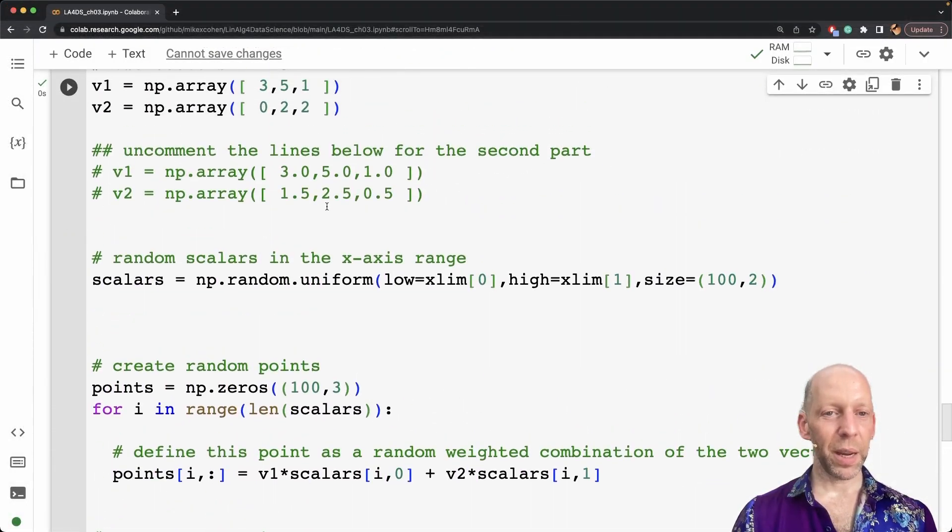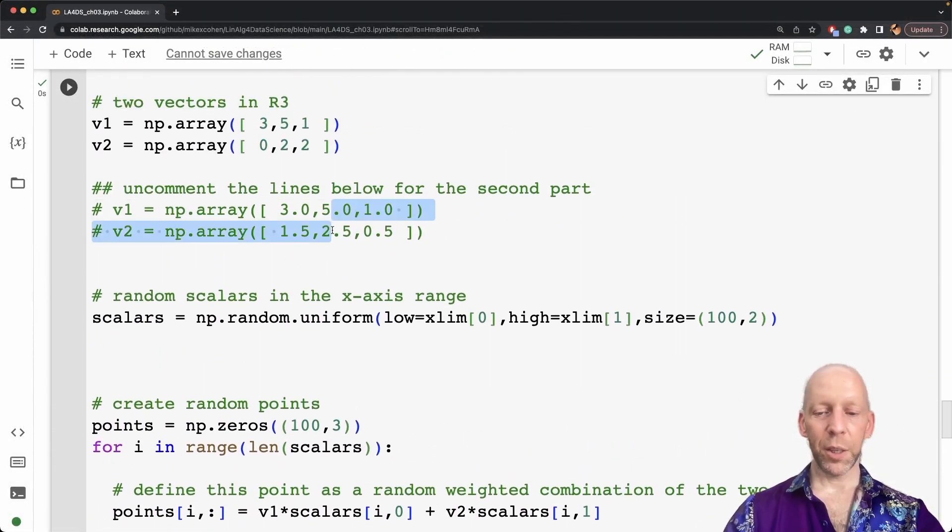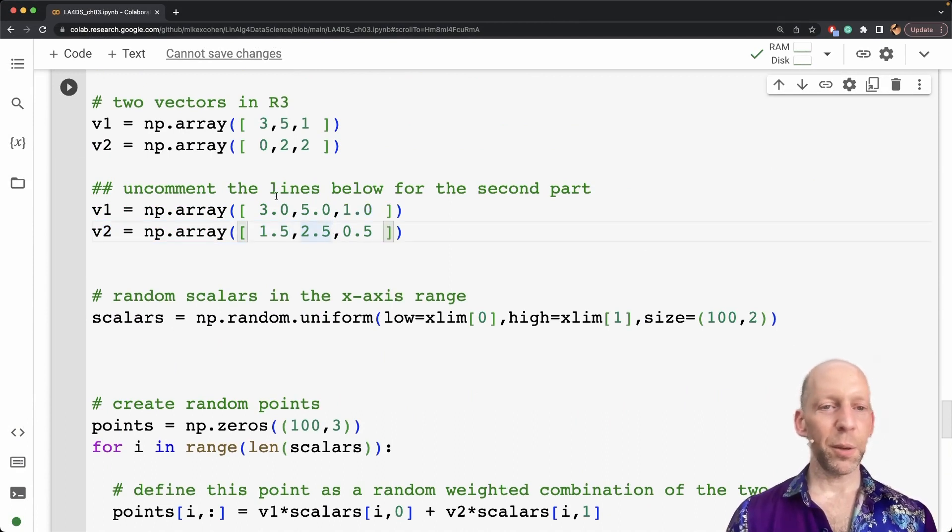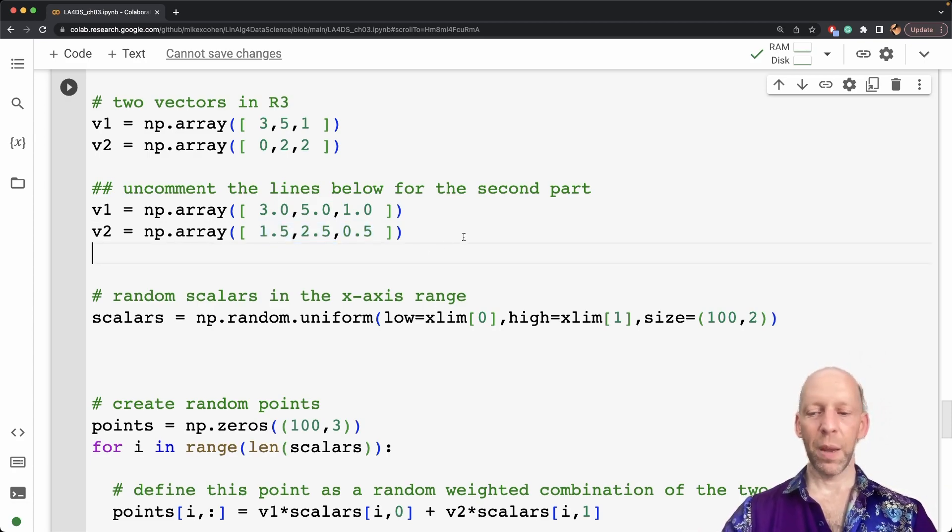So let's see, and that we can obtain by just uncommenting this line. So you see, I have this three, five, one, and this is one and a half, two and a half, and one half again.